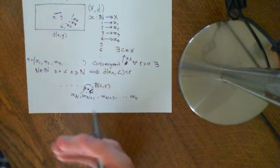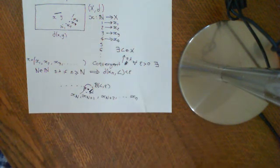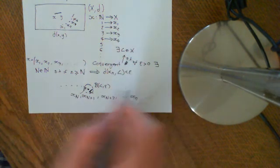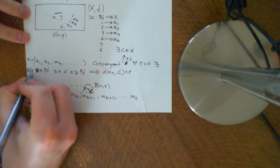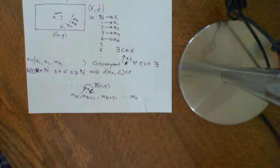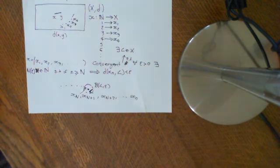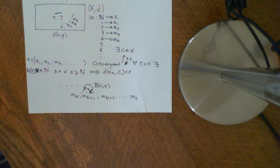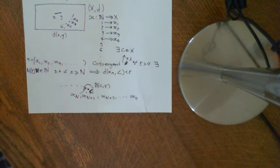This big N will depend on epsilon — there isn't just one big N that works for any epsilon. The definition says that if I give you an epsilon, you can find me a big N. Often you'll see people write big N as a function of epsilon. If I give you epsilon = 0.5, you find a corresponding N; if I give you epsilon = 0.01, you'd find a different, potentially larger N — though it might coincidentally be the same one.